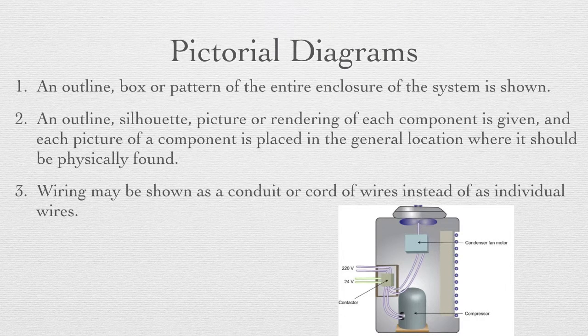Let's move on to pictorial diagrams. Pictorial diagrams can be identified in the following ways. One would be an outline, a box, or a pattern of the entire enclosure of the system. The second would be an outline, silhouette, picture, or rendering of each component is given, and each picture of a component is placed in a general location where it can be physically found. Third, a wiring diagram may be shown as a conduit or a cord of wires instead of as individual wires. Pictorial diagrams are used to locate components through visual identification. Wiring to each component is shown, but not with clarity. Wire bundles or cords can also be identified.